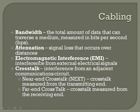Crosstalk is somewhat similar to EMI — it's interference from an adjacent communication circuit. If you've got phone cables bundled together and they're not twisted pair, signal can leak into each other. That's actually the reason for the twisting of pairs — to prevent crosstalk. There are two subcategories: near-end crosstalk (NEXT), which is crosstalk measured from the transmitting end, and far-end crosstalk (FEXT), measured from the receiving end.